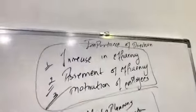So the last set: function of control, increase in enthusiasm, and finding out deviation. In nine points we studied the importance of direction. So today we started the directing chapter — what direction is, its characteristics, and its importance. In the next session we will study the elements of direction. Till then, goodbye.